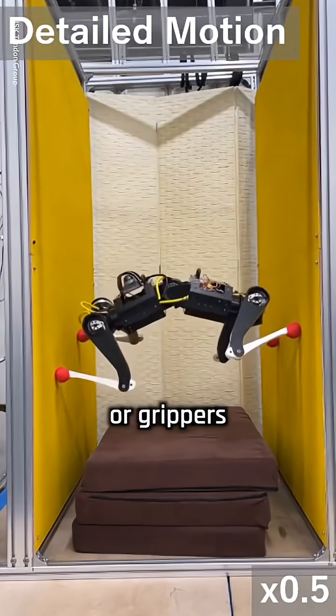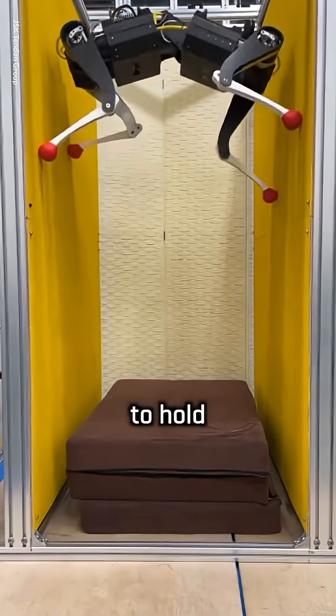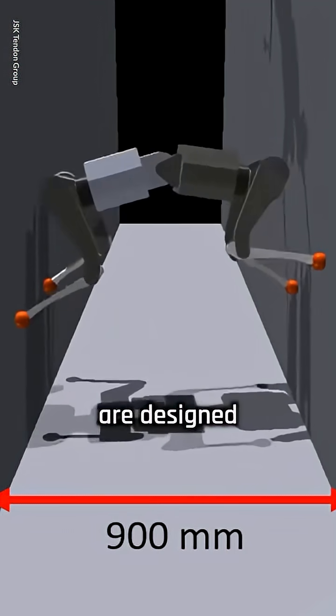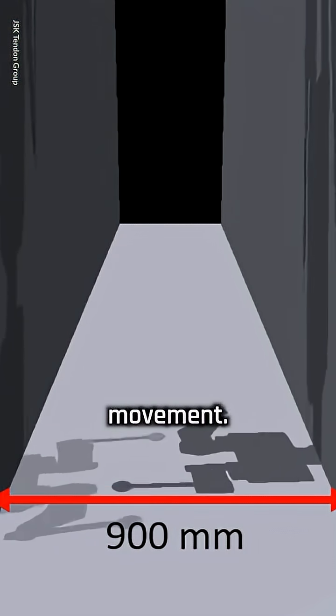Instead of using claws or grippers to climb, Klein pushes its legs firmly against walls to hold itself up. Its legs are designed to apply strong, controlled pressure, and each one has joints that give it precise movement.